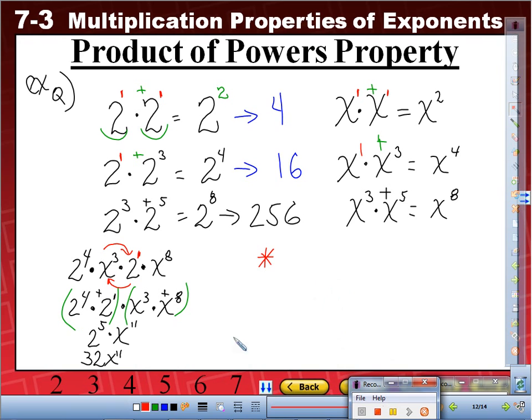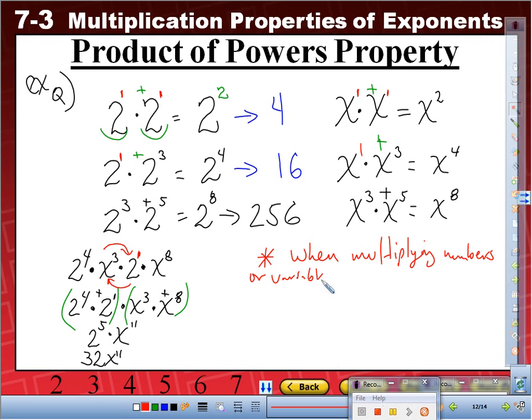So they said, when multiplying numbers or variables of the same base, we add the exponents. Did we do that? Yeah, right? Same base, we added the exponents. Same base, we added the exponents.